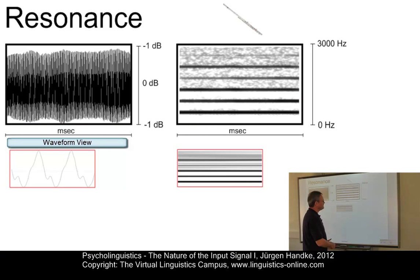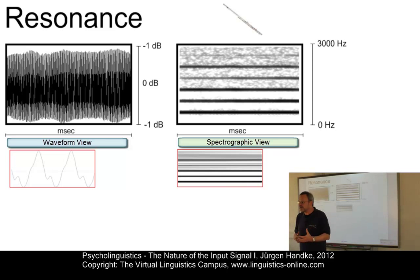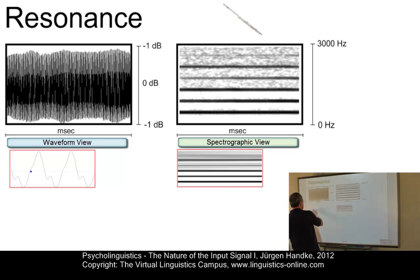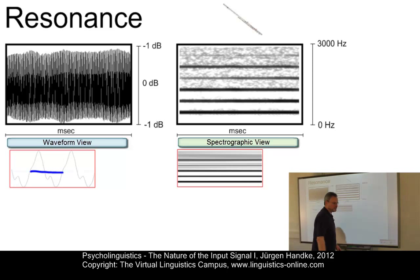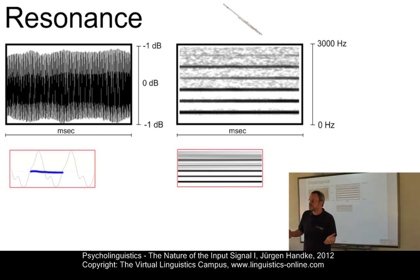Here we have the waveform view to the left with an enlargement and the spectrographic information. The waveform displays a complex sound wave which is fully periodic. The periodicity you can see in the enlargement — this is one cycle, but you can see it's now a combination of several simple sounds. Apart from the intensity information, it is similar to that of a simple sound wave.